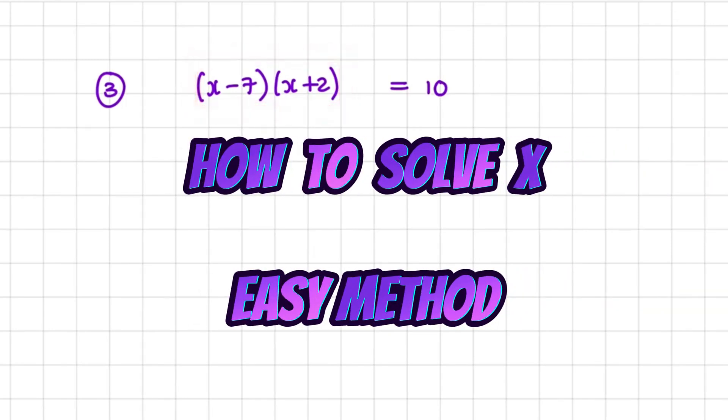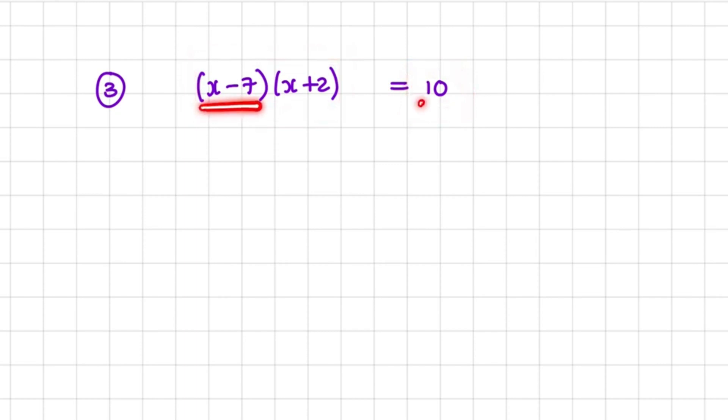Here we have (x-7)(x+2) equals 10. Now we are tempted to make each bracket equal to 10, but that is not true.